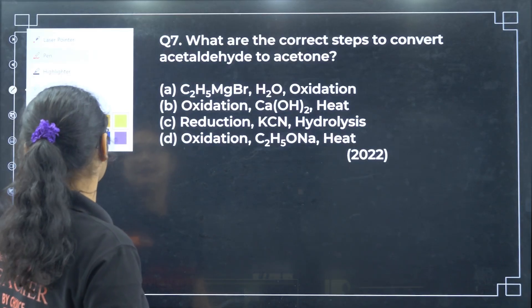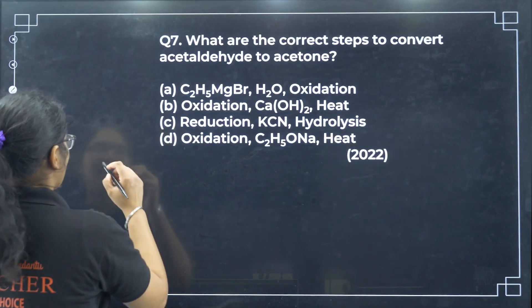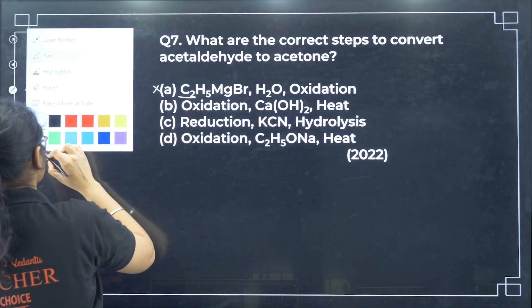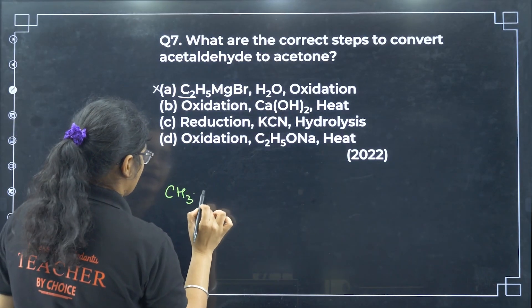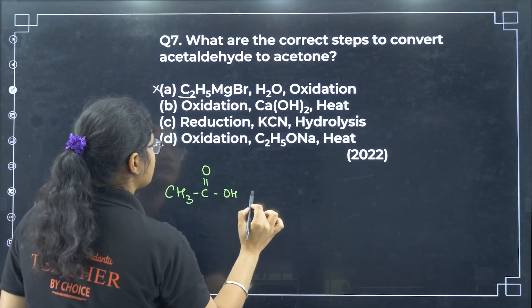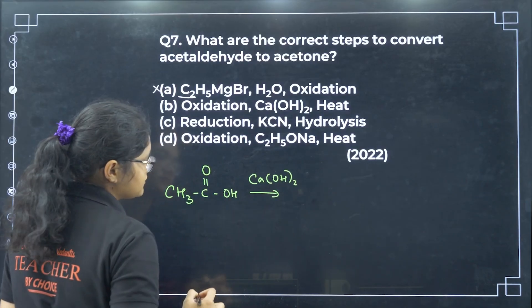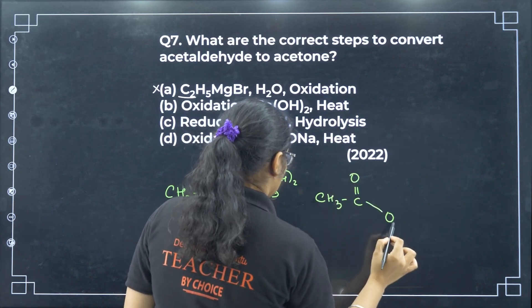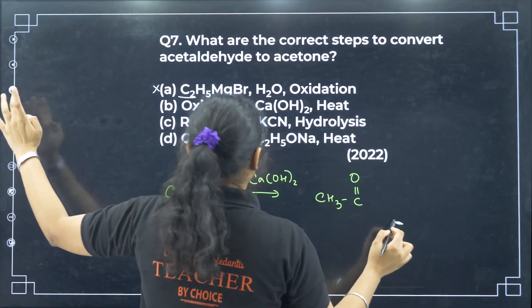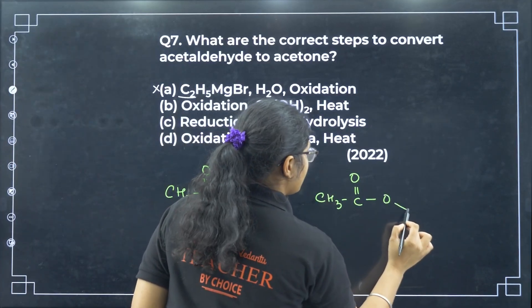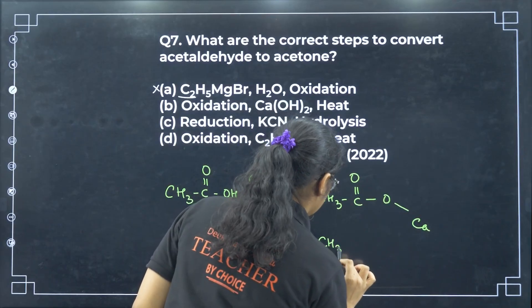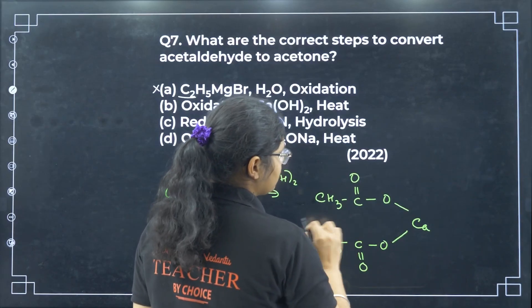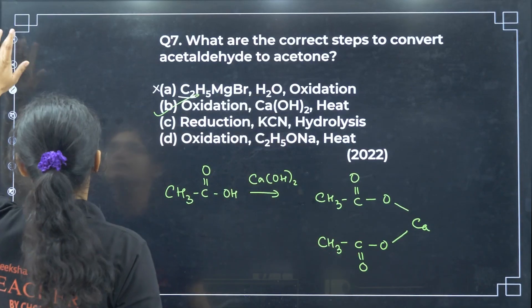What are the correct steps to convert acetaldehyde to acetone? Oxidizing acetaldehyde gives acetic acid. Reacting with calcium hydroxide gives a salt: CH3C double bond O, CaO, C double bond O, CH3. On heating, there will be a loss of acetone from this molecule. So option B is the correct answer.